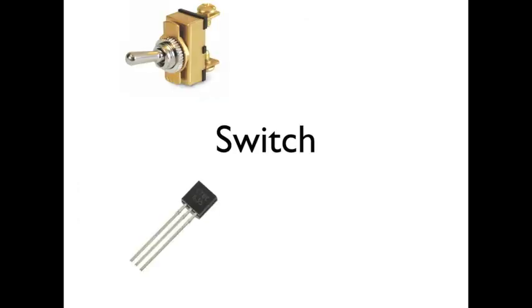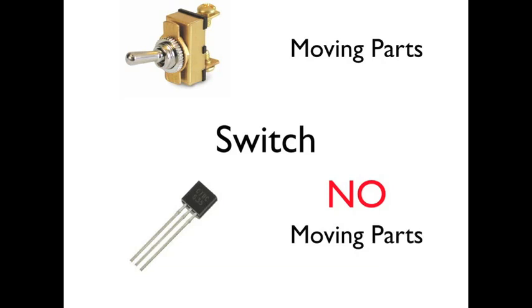A switch. Here's two examples. The top one is a common toggle switch. It has moving parts, and the bottom one is a transistor. It is a switch, but it has no moving parts, and they can be extremely tiny.